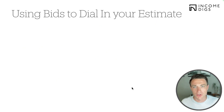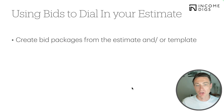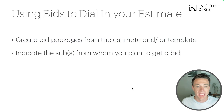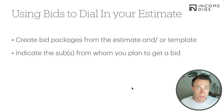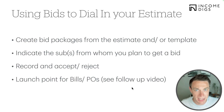Let's get into it. Use bids to dial in your estimate — that's what we're doing here. Almost all of us are going to estimate before we have bids, at least some kind of ballpark, but then we get our subcontractors or suppliers to give us actual hard numbers. Create a bid package from an estimate or template — I love to do it from an estimate. Indicate the subs from whom you plan to get a bid. Not all of them need to be in BuilderTrend. Record and accept or reject any bids, and then it's your launch point for bills and POs. I want to really focus on the actual bid process right now.